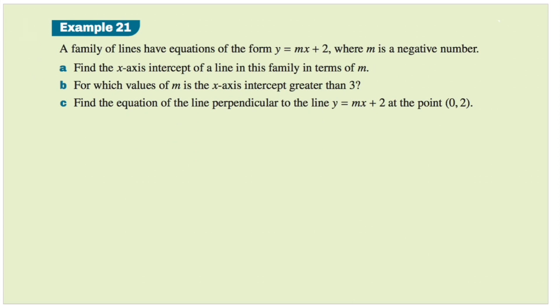Example 21. A family of lines have equations of the form y equals mx plus 2. It seems like they all share the same c value, the same y-intercept, whereas the gradient varies. m is a negative number. Here we've been given that the gradient is negative. Question A asks us to find the x-intercept of a line in this family in terms of m. In terms of m means we can express our answer using m, including m. It doesn't have to be a specific number.